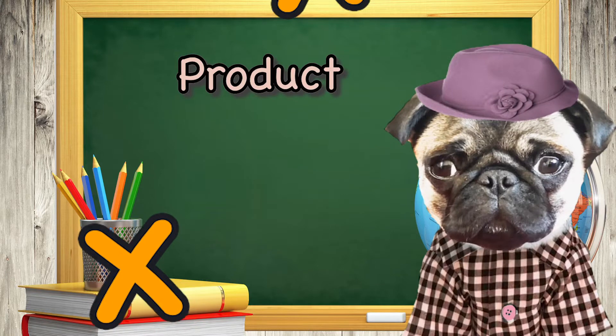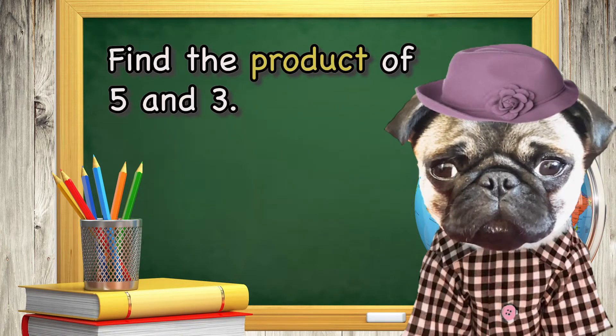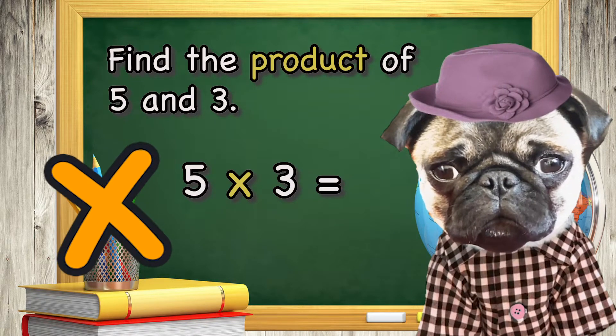The product is the answer to a multiplication problem. For example, find the product of five and three. To find the product, you will need to multiply five and three together.